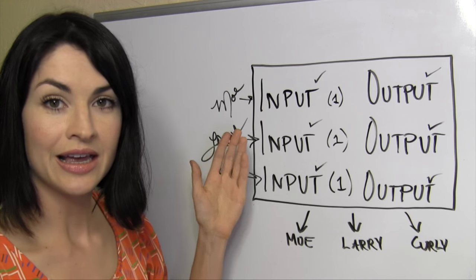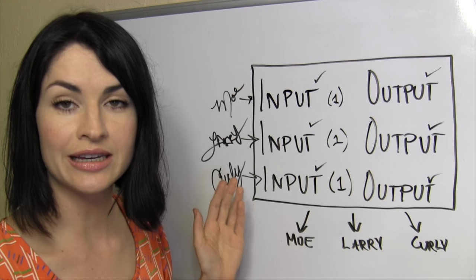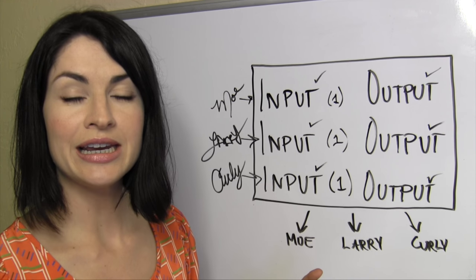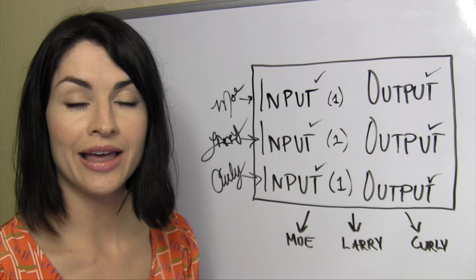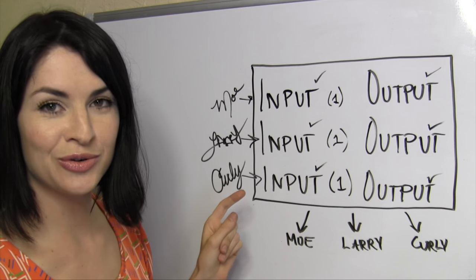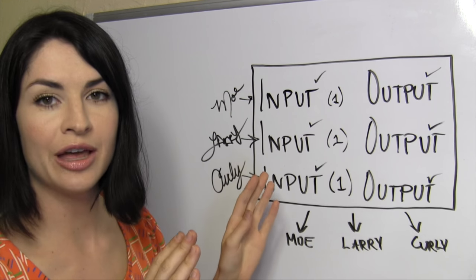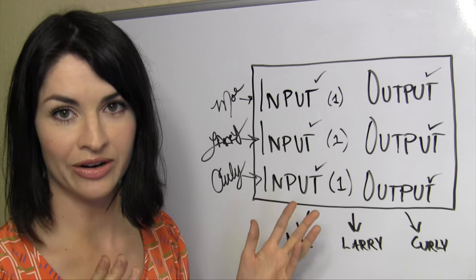Because, of course, Moe doesn't know Larry's private keys, Larry doesn't know Curly's private keys, and et cetera. So they need to sign this transaction, they need to say it's okay, in a way that allows the other two to sign it without any of them needing to know each other's private keys.